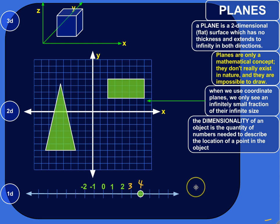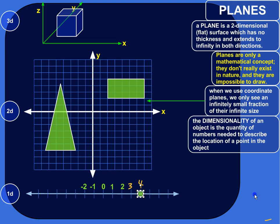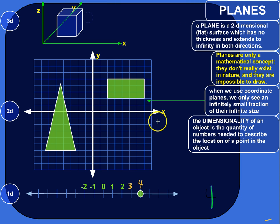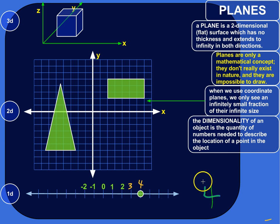First, let's look at a one-dimensional object — a one-dimensional space — and that's this number line. The dimensionality of an object is the quantity of numbers you need to describe the location of a point on that object. Here's a point on my number line. How many numbers do I need to describe where that point is? Just one. Its location is four. That's the location of this point on the one-dimensional line, so I only need one number to describe where it is.